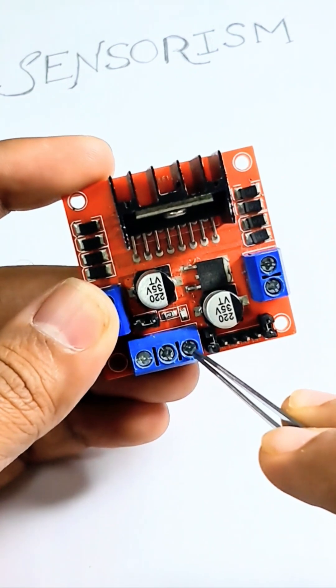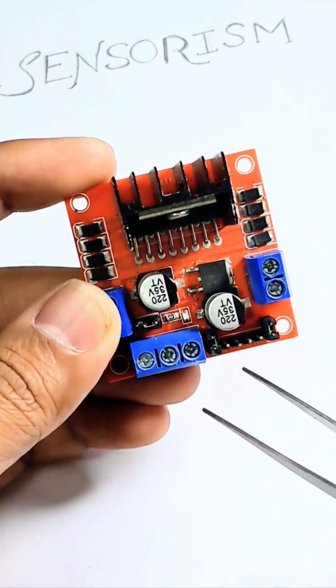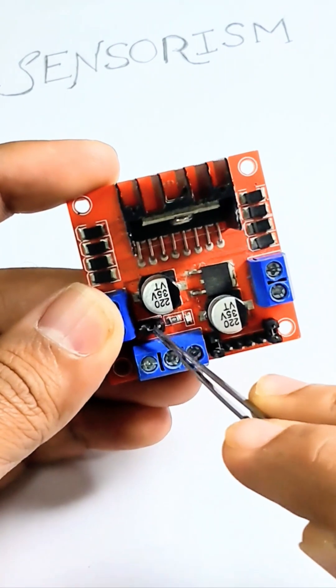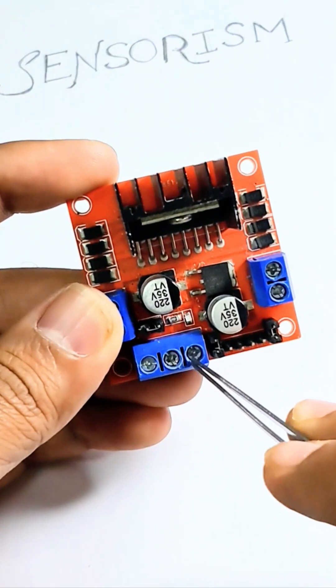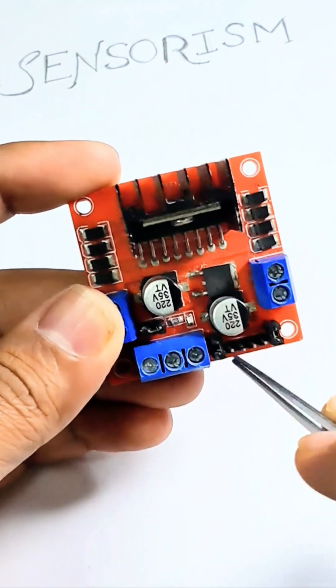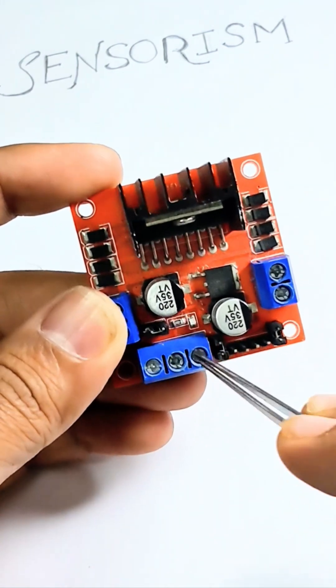And it emits a 5 volt signal which you can use for powering other microcontrollers or sensors. This jumper here provides the voltage conversion from 12 volts to 5 volts output, which you can use for these terminals or to power other sensors or microcontrollers.